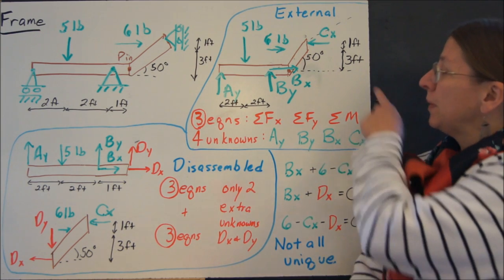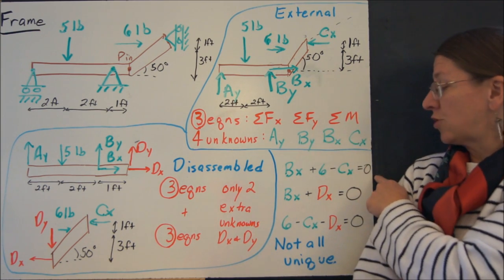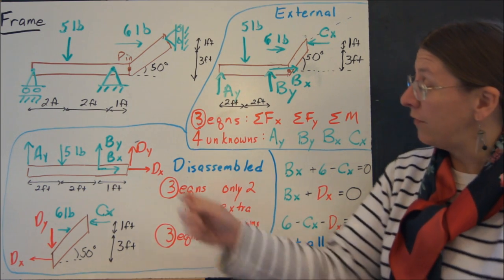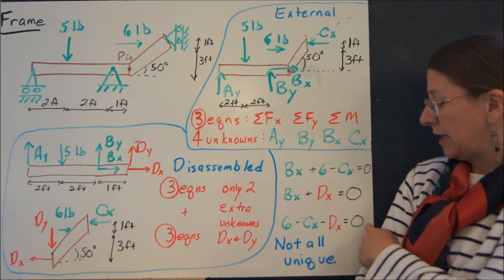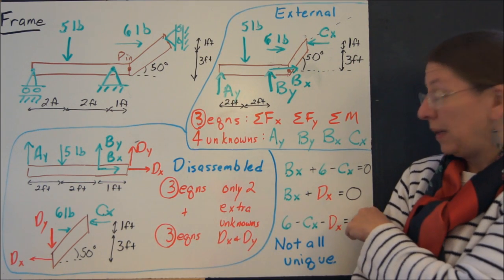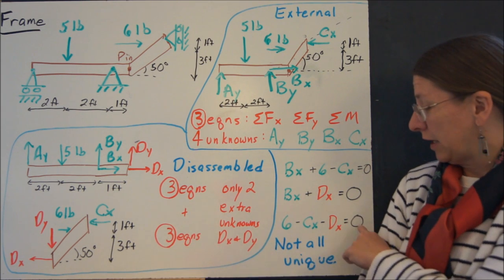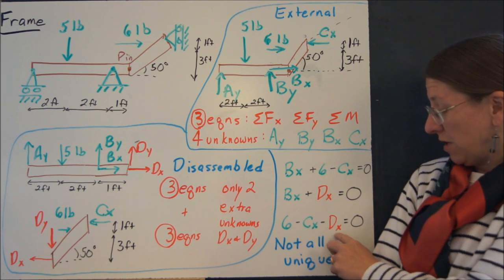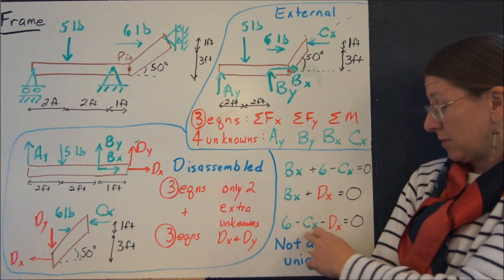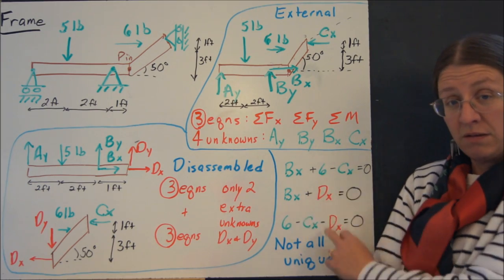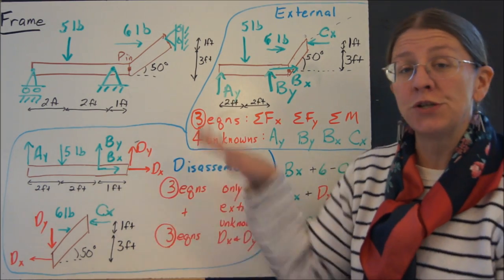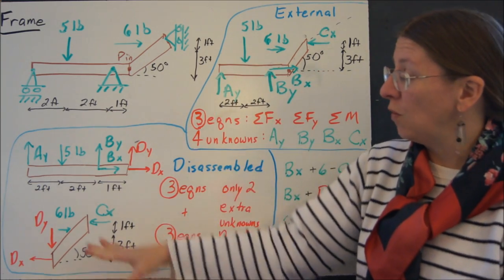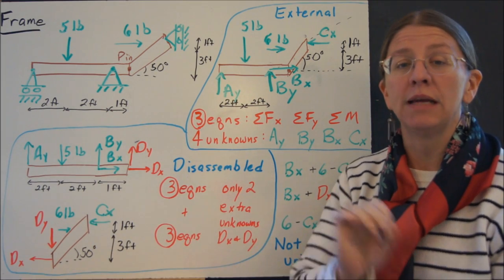And if you look at this example right here, the sum of the forces on this beam in the x direction would give you bx plus six minus cx equals zero. If you look at the sum of the forces in x on this beam, you get six minus—excuse me—bx plus dx equals zero. And down here you're going to get six minus cx minus dx. And it's pretty easy to sort of look here and say, if you solved this one for dx, you'd get six minus cx, you'd put that in there, you've got the same thing. So these will reproduce the relationships that are up here. So you only get this number of linearly independent equations.